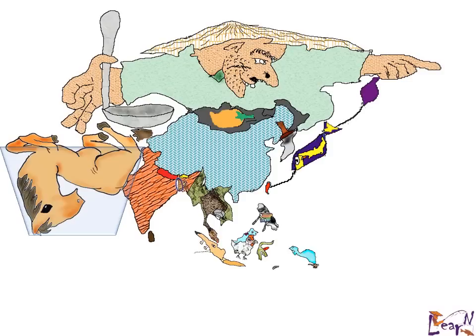Do not mistake him for Leonardo — he just wears a similar hat and is interested in fishing. He is the Asian Monster. You may notice here the belt and the knife on the belt.